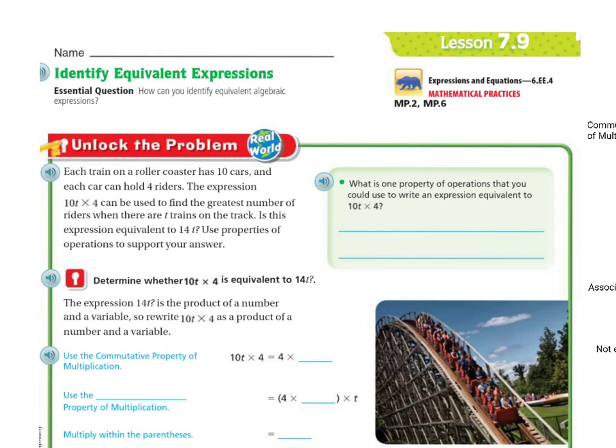What is one property of operations that you could use to write an expression equivalent to 10T times 4? You can use the Commutative Property of Multiplication.